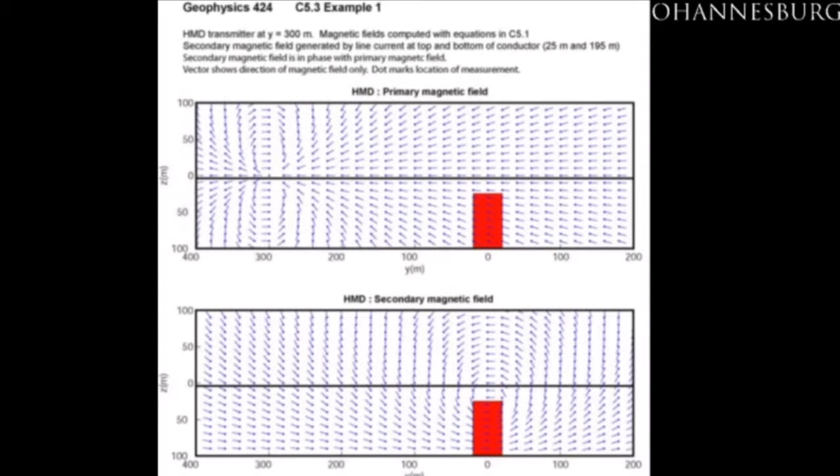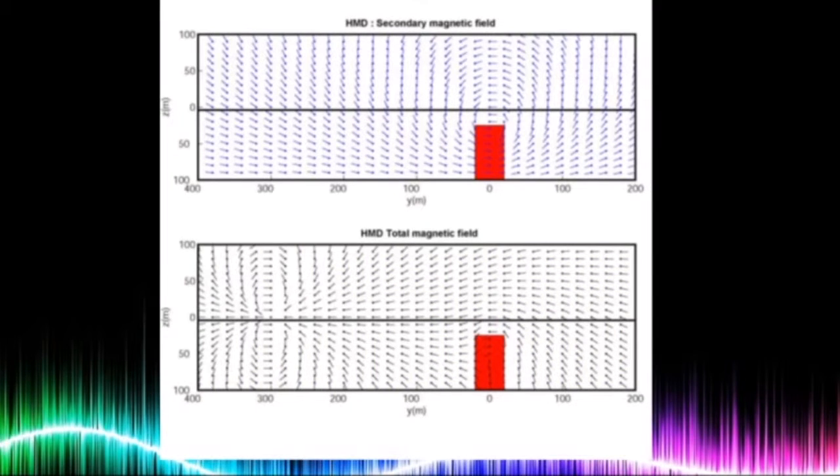These are field lines for the magnetic field. So this first one is when the primary magnetic field is switched on, so the source loop is producing a magnetic field. And then a secondary field is produced in the target, and then what we're seeing is the sum of the two, so how they interact with each other. Just to show you how weak the secondary fields are. The magnetic field is nice, but the secondary fields are a lot weaker.